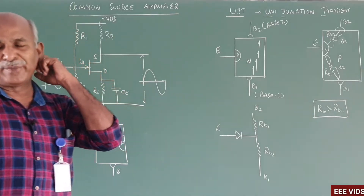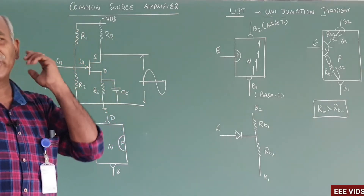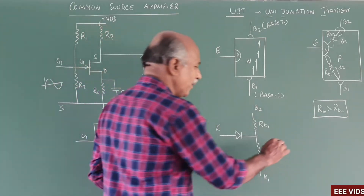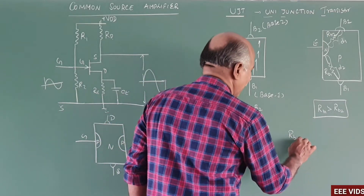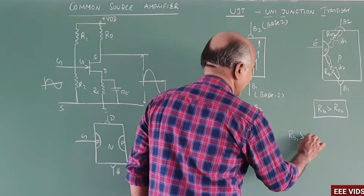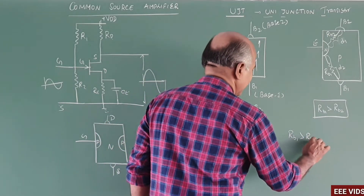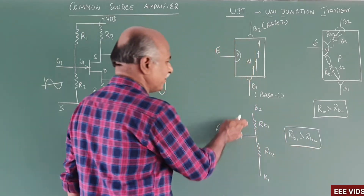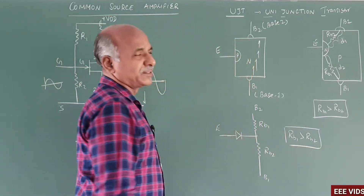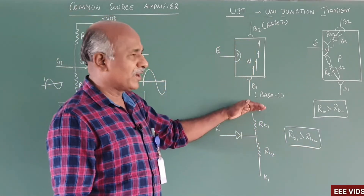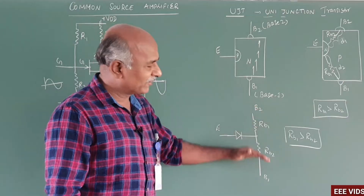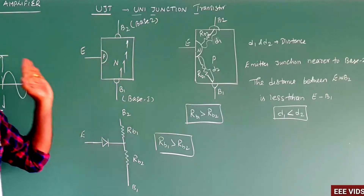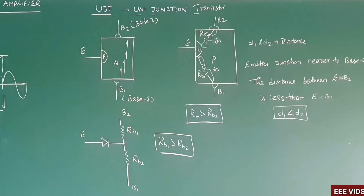In the base-1 to base-2 path, the total resistance is present. In this, R-B1 is less and R-B2 is more. Because the emitter junction is nearer to base-2, the resistance R-B2 is smaller and R-B1 is larger. This is the UJT equivalent circuit.